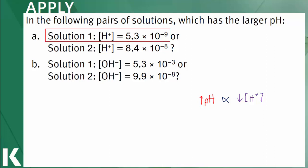We can also just calculate this. Using the equation pH equals negative log of the concentration of the hydrogen ion, pH of solution 1 is 8.3 and the pH of solution 2 is 7.1. Therefore, solution 1 has the higher pH.